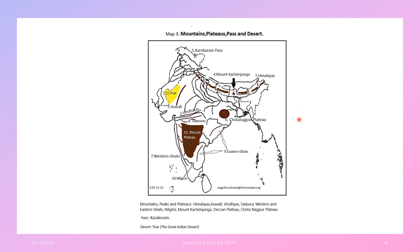With that we come to the end of mountains, plateaus, passes, and deserts. Key points to remember: Karakoram Pass, Kanchenjunga Mountain, Thar Desert, Aravalli. Western Ghats are very important. Eastern Ghats have nothing in the middle. Deccan Plateau should not touch Tapi or Kaveri. Chhotanagpur looks like a bubble touching the River Barakar. Vindhya and Satpura Mountains should not touch any of the rivers.